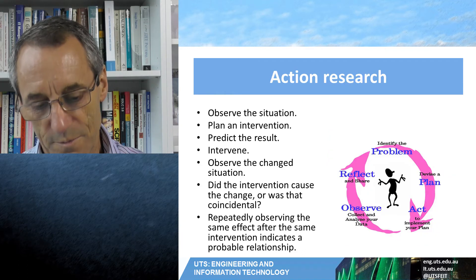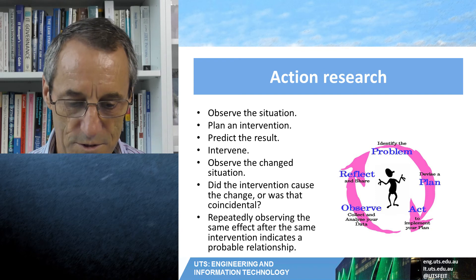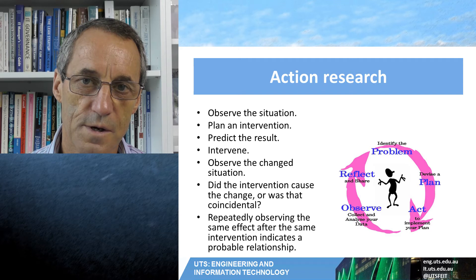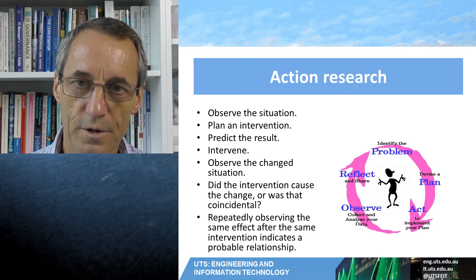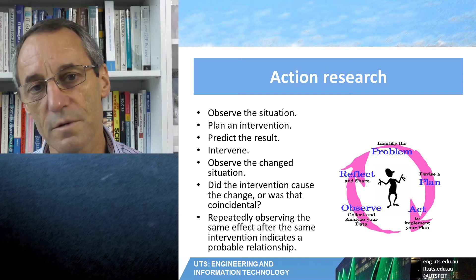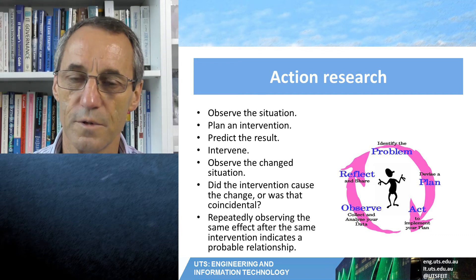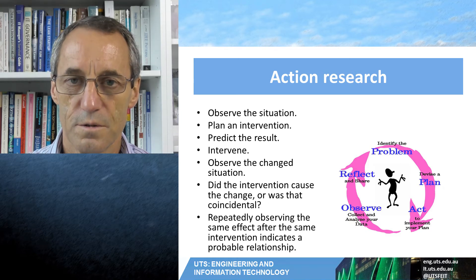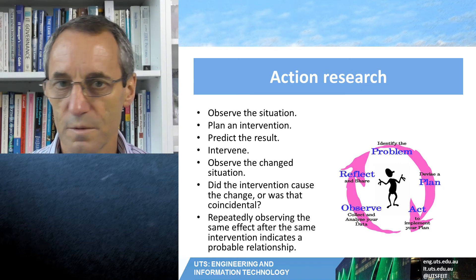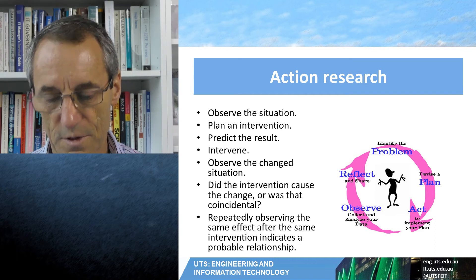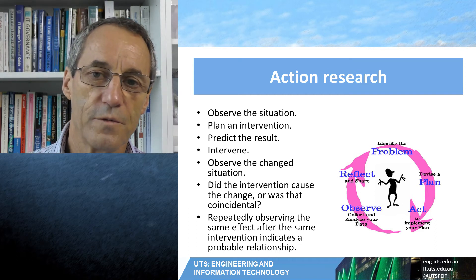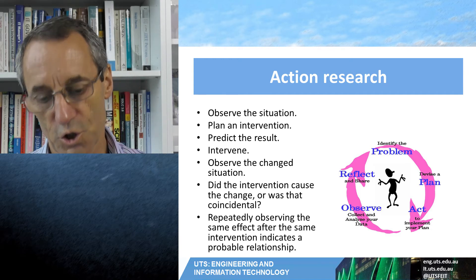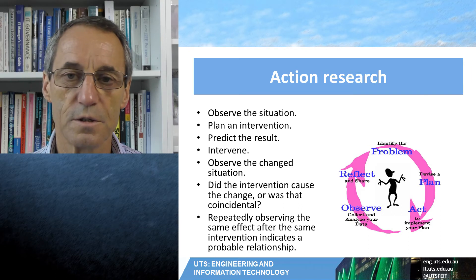With action research, the whole idea is that you should observe the situation, plan your intervention, and predict the result of the intervention. This is important — you must predict the result of the intervention. It can't be 'we'll just do this and see what happens.' You are obliged to predict what happens, otherwise you're just messing about and wasting everyone's time. You make the intervention, you observe the same situation, and then ask: did the intervention cause the change, or was that coincidental?